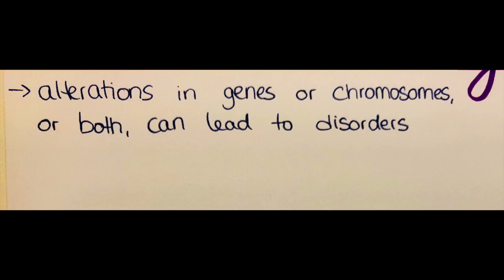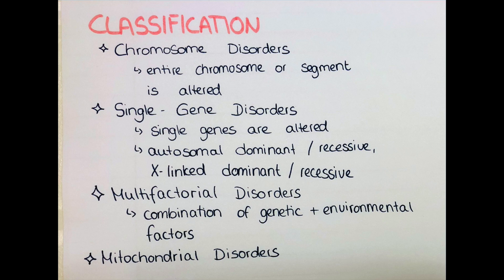So what are genetic diseases? There are alterations in genes or chromosomes, or perhaps both, that can lead to disorders, and we can classify them according to the change. We have chromosome disorders where either an entire chromosome or a segment of a chromosome is altered. There are single gene disorders where only single genes are altered, and those can be autosomal dominant or recessive, or X-linked dominant or recessive.